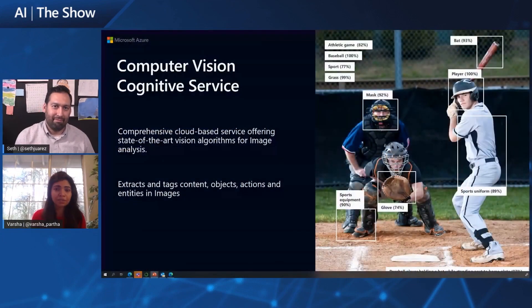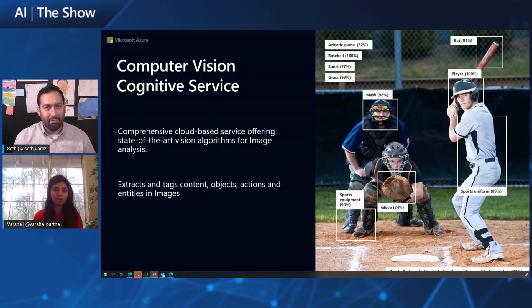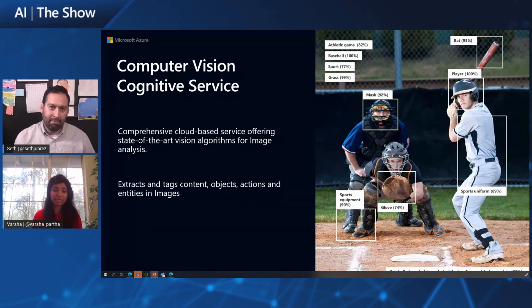Let's start first with what Microsoft has to offer with computer vision. The Cognitive Services vision offerings give you access to advanced algorithms that process images and return information based on visual features — whether it's tagging content in images, detecting objects, identifying entities, or even actions between these entities — essentially helping customers extract insights from images.